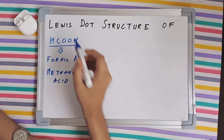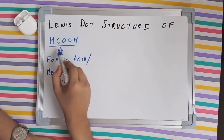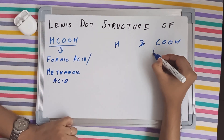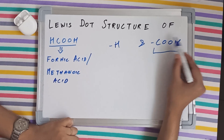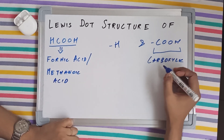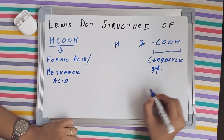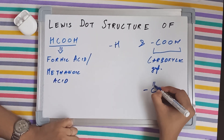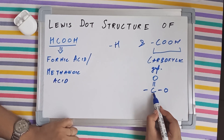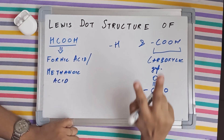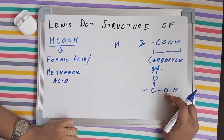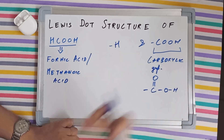There are two parts in this molecule: the hydrogen and the COOH part. This COOH group is called the carboxylic group. Carbon makes four bonds: two bonds with one oxygen (a double bond), and one bond with the other oxygen in OH. That oxygen makes a single bond with carbon and its second bond with the hydrogen in OH.